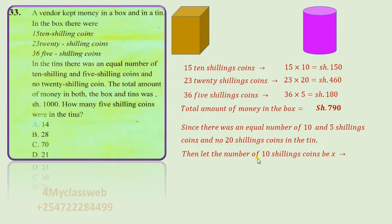And so the value for the ten-shilling coins in the tin will be 10x. Repeat the same for the five-shilling coins, whereby they were x because they were the same number, and therefore we multiply by x to get 5x.